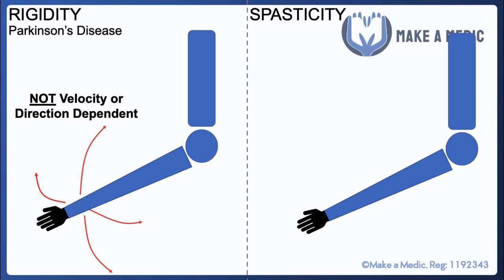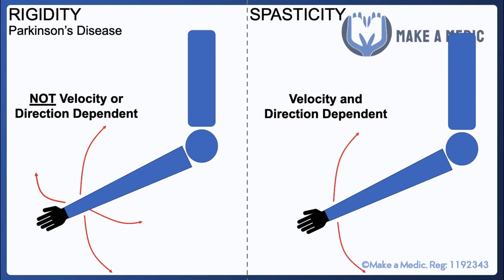Spasticity, on the other hand, is both velocity and direction dependent. If you see someone who has had a stroke, you may notice a certain pattern of weakness that gives rise to a certain posture — classically their arms tend to be flexed and their legs tend to be extended. When you try to assess tone in the upper limb of a stroke patient, the quicker you try to extend the elbow joint, the more resistance is felt — that's velocity dependence. Furthermore, it's in certain planes of movement that the resistance and increased tone is felt most.